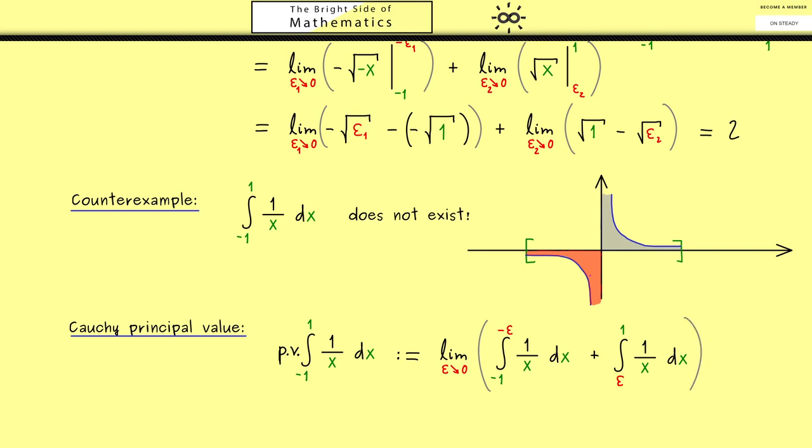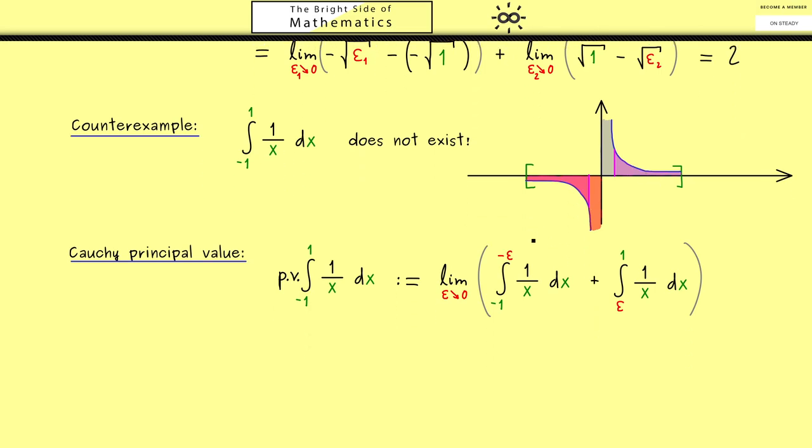In other words, we do this approximation in a symmetric way. And then in the picture we immediately see that the finite areas here will cancel out no matter which positive epsilon we choose. And of course we also see this in the calculation.